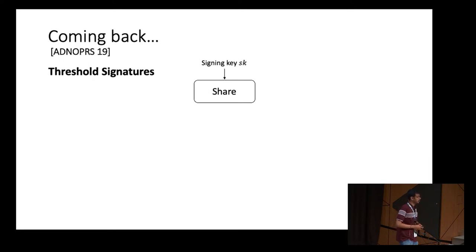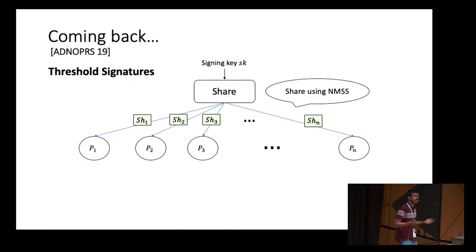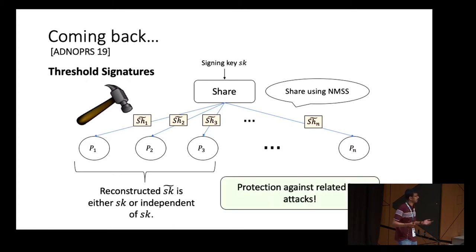Coming back to threshold signatures, let's see how non-malleable secret sharing prevents related key attacks, as proposed in a recent work of Agarwal et al. The sharing phase takes in the secret signing key SK and shares it using a non-malleable secret sharing scheme instead of any threshold secret sharing. When an adversary tampers with these shares, the non-malleability property ensures that the reconstructed secret SK-tilde is either the original SK or something completely independent of SK, protecting the system against related key attacks.